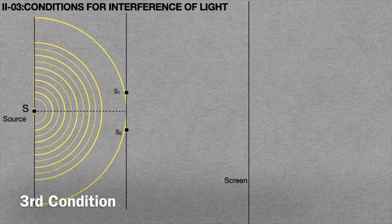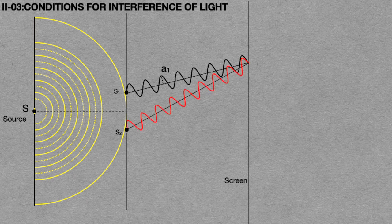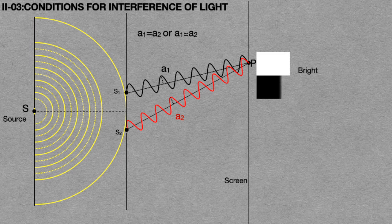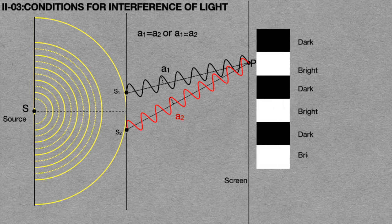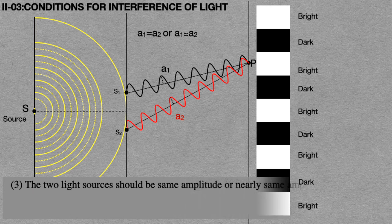The third condition is shown in this animation. Consider the light wave emerging from light source S1 having amplitude A1, and the light wave emerging from light source S2 having amplitude A2. If these two waves are superposed and form an interference pattern at point P, then it must satisfy the condition: A1 equals A2 or A1 is approximately equal to A2. Then only a stable interference pattern is formed.